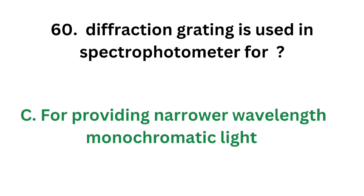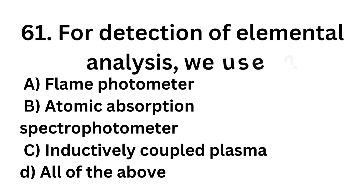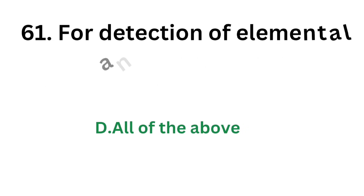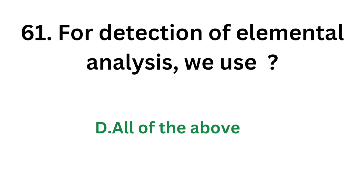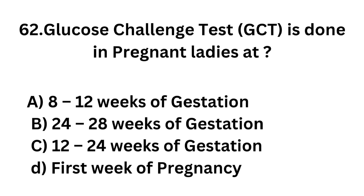Question number 61. For detection of elemental analysis, which equipment is used? Option A - Flame photometer; Option B - Atomic absorption spectrophotometer; Option C - Inductively coupled plasma; Option D - All of the above. The correct answer is Option D, all of the above. For elemental analysis we use flame photometer, inductively coupled plasma, and atomic absorption spectrophotometer.